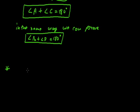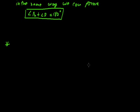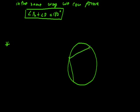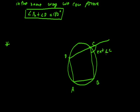The next theorem states that the exterior angle of a cyclic quadrilateral is equal to the interior opposite angle. From the figure, we have cyclic quadrilateral ABCD. If we produce side CD, this gives us the exterior angle at C. We have to show that the exterior angle C is equal to angle A.